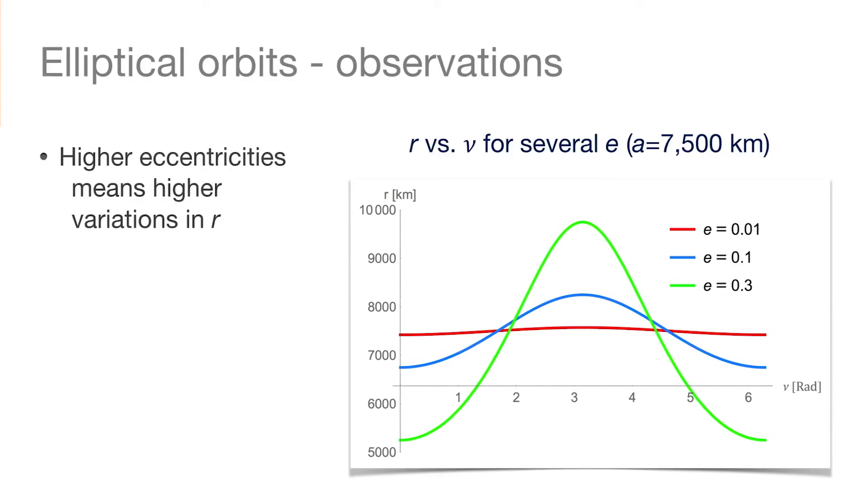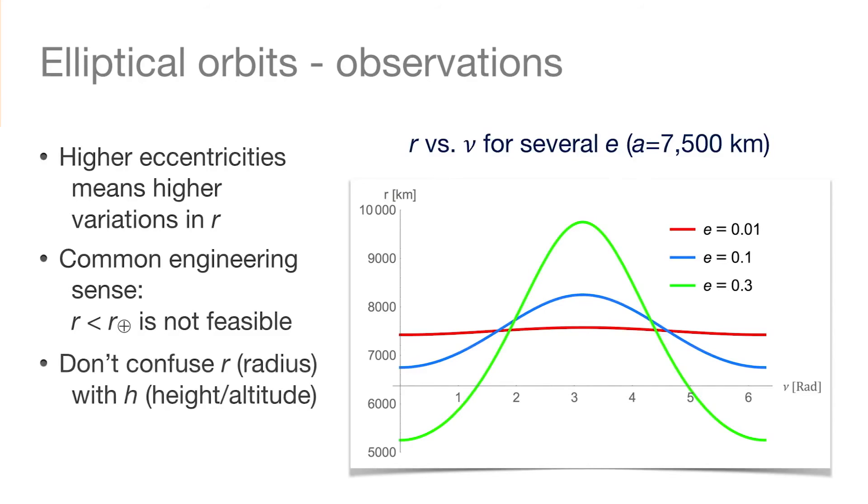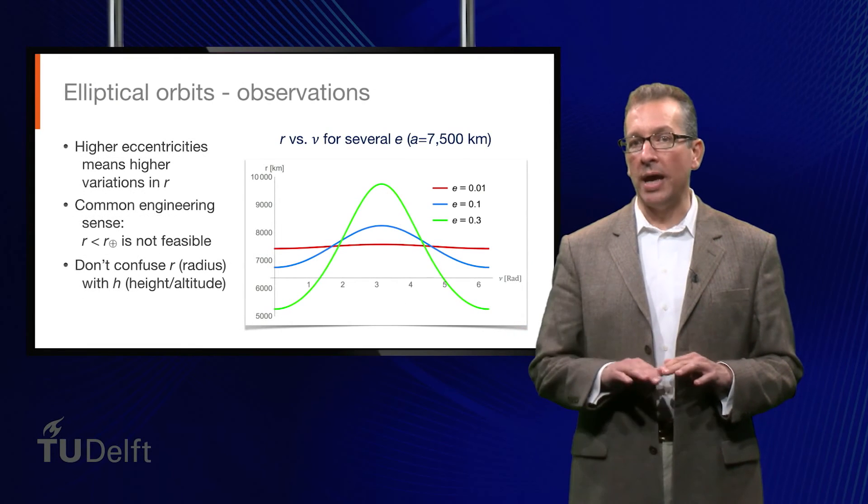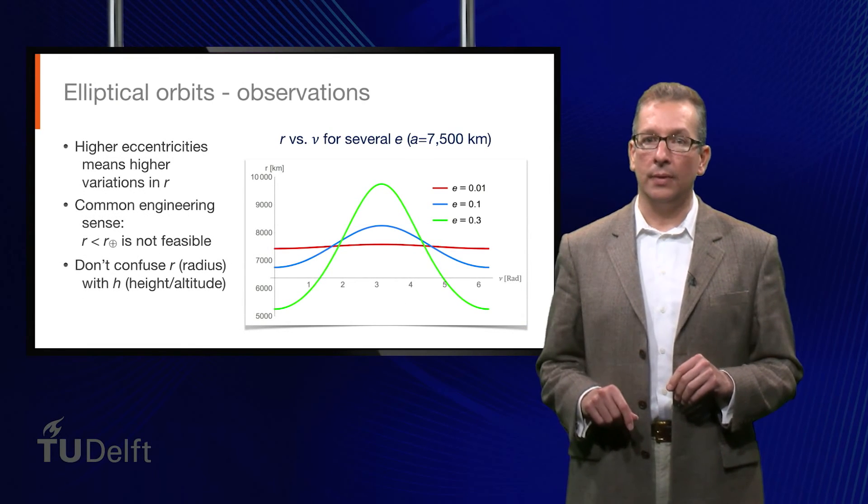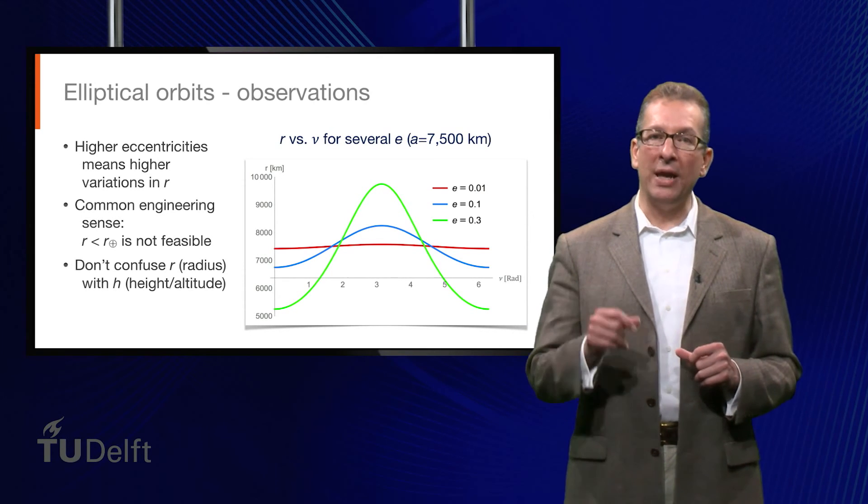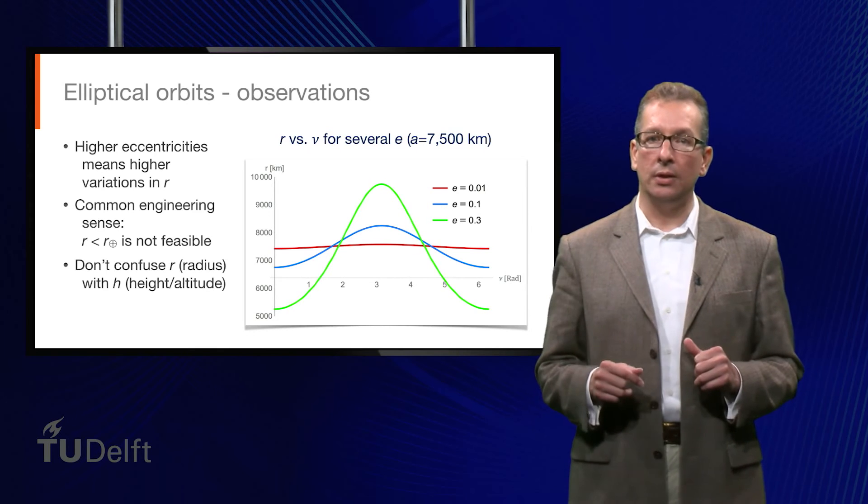Hold on a minute. The trajectory equation tells us that the radius at perigee is 5,200 kilometers, but don't forget to use your common sense as an engineer. The radius of the Earth is 6,370 kilometers, give or take, so this orbit is not feasible in the real world. This is a good point to reemphasize that you should always be clear about what you're dealing with. In this case, it's the radius we're talking about, not the altitude. It's no coincidence that the horizontal axis on this plot is placed where it is. Always make sure to help yourself and make it as easy as possible for your audience to digest what you're telling them.